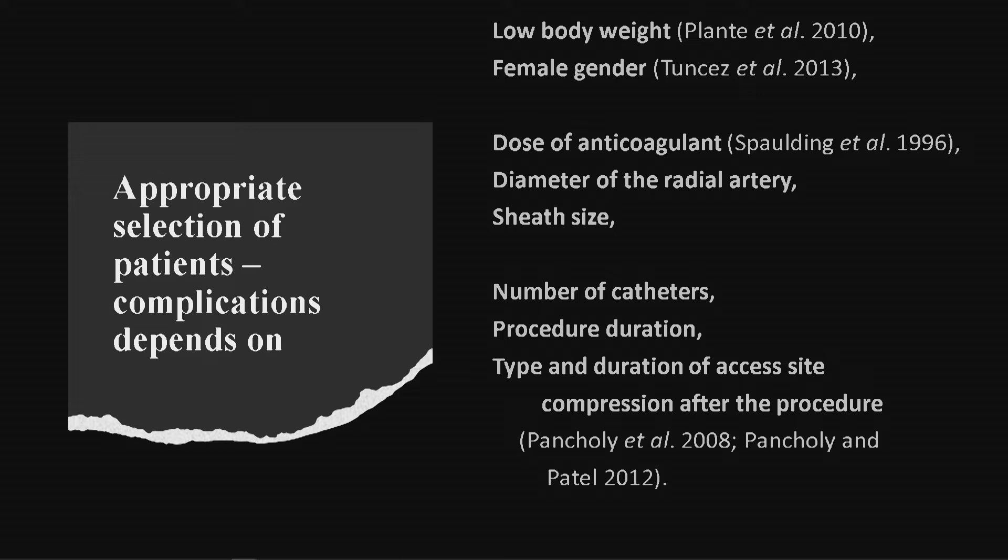Dose of anticoagulation is very important. Diameter of the radial artery, sheath size — if the sheath size is mismatched with the arterial size, this is a cause of radial complication. Number of catheter exchanges, procedural duration, and type and duration of excess compression after the procedure — as evaluated by Pancholi and Patel in 2012.